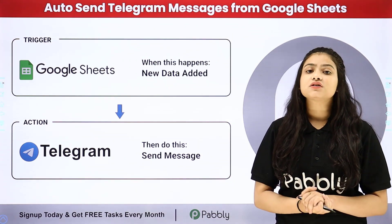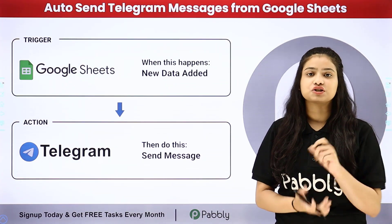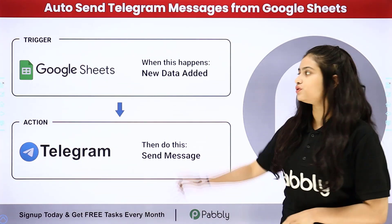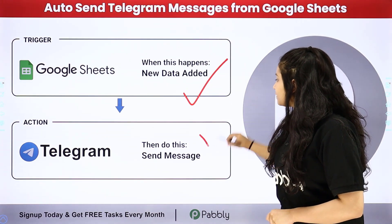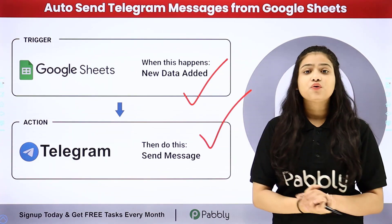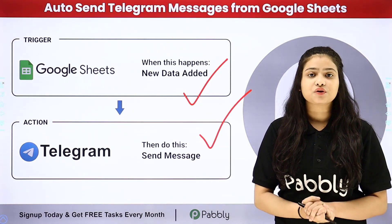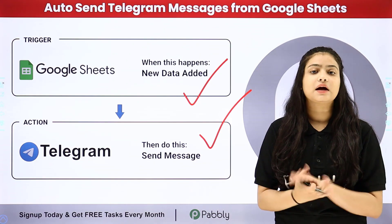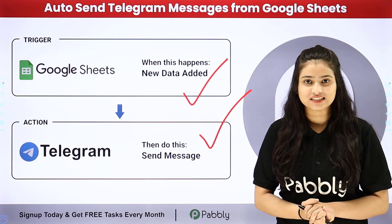Pabbly Connect works on two principles: trigger and action. In the trigger we are going to take Google Sheets, and in the action we are going to take Telegram. We will connect both of them in order to automate this entire process of sending Telegram messages from Google Sheets automatically.